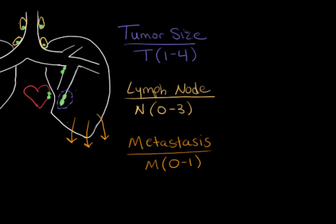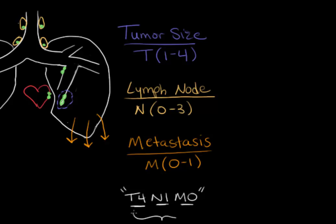This is really thorough information, and with so many combinations of numbers and letters it might get confusing — for example, a person's stage being T4, N1, M0. Medical professionals will often group these different combinations together and simply tell a patient they have stage 3 cancer. I won't go through all the groupings because it gets complex, but TNM staging can be simplified into these broader stage categories.